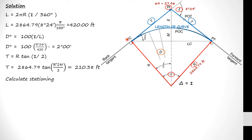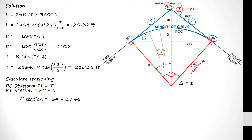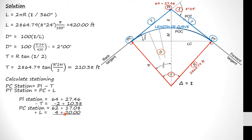Now we calculate the station equations for PC and PT. PC equals the PI station minus the tangent length. The PI station is 64 plus 27.46, and we subtract 2 plus 10.38, giving a PC station of 62 plus 17.08. For the PT, we take the PC and add the length of curve — 4 plus 20 in station notation. Adding 62 plus 17.08 and 4 plus 20 gives us a PT station of 66 plus 37.08.